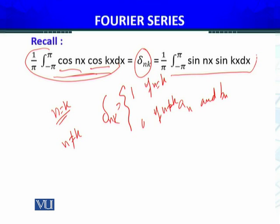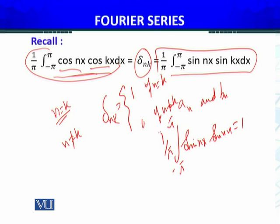Similarly, we have the expression for sine. This integral with sin(nx)sin(kx) from minus π to π times 1 over π will be the Kronecker delta. I have given you the definition. I will use these results in order to evaluate the Fourier coefficients a_n and b_n.